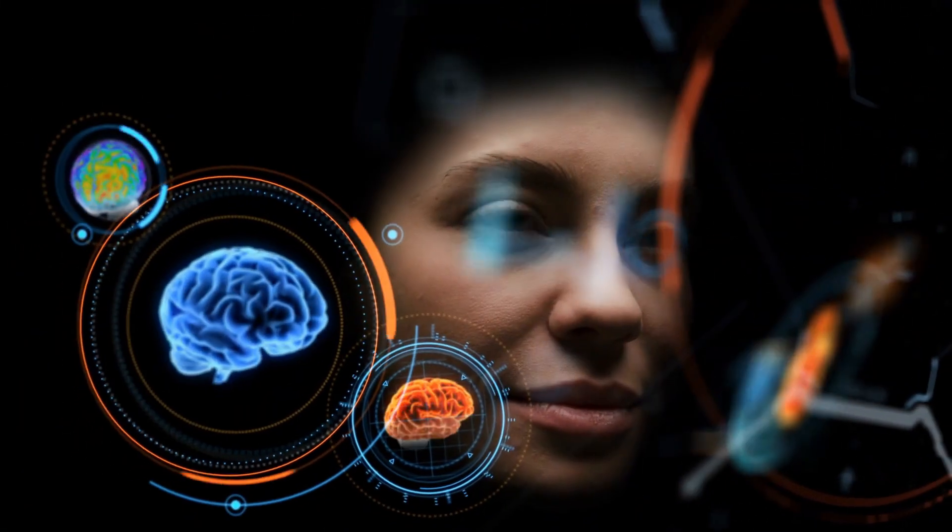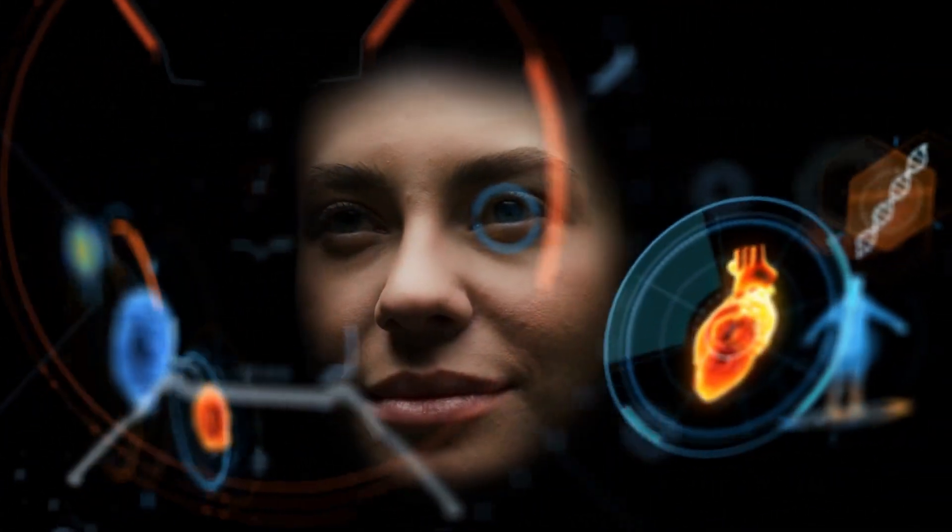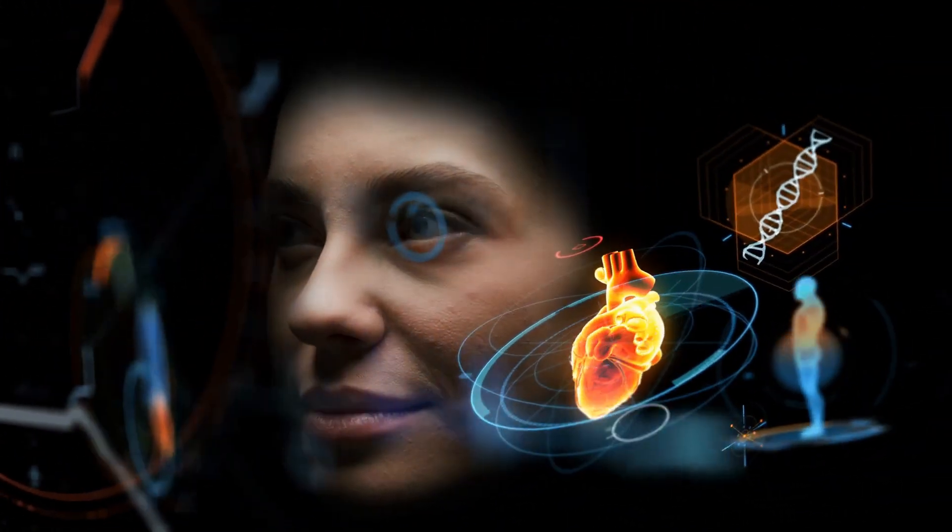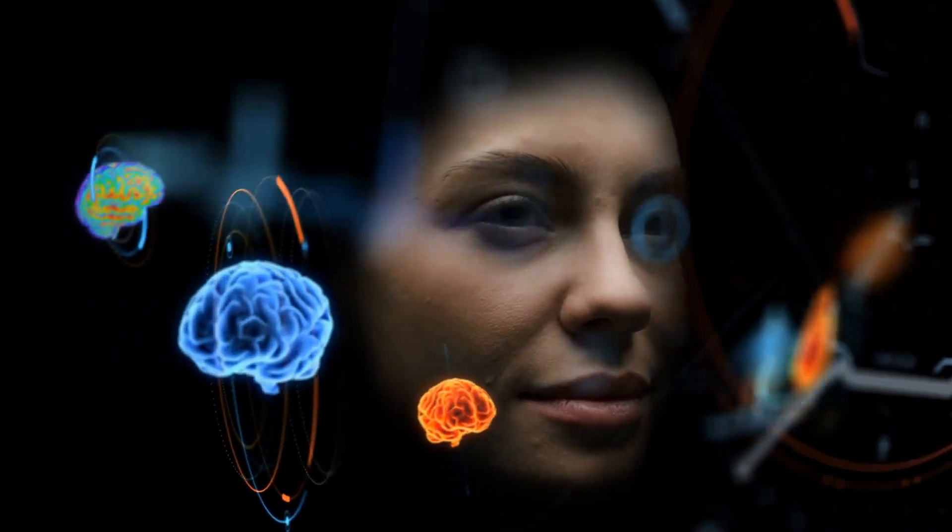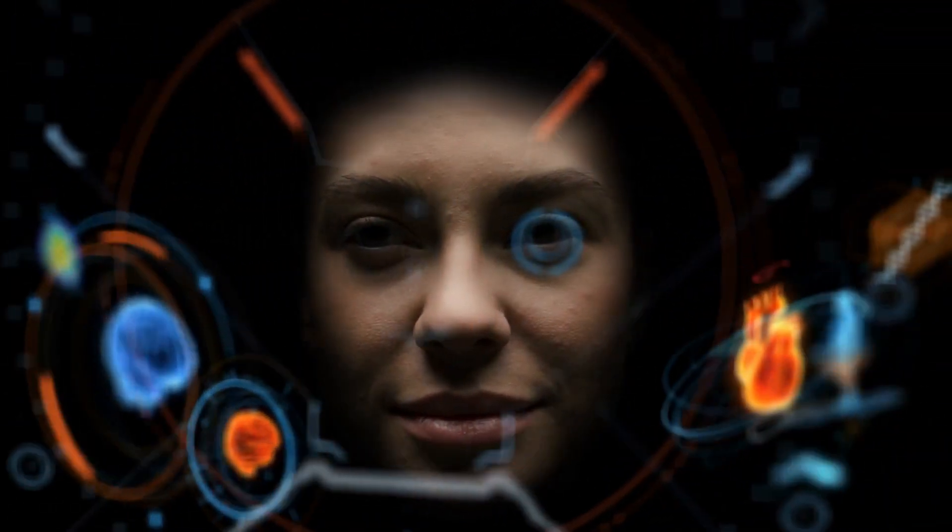However, the brain's storage system is indeed unique. Unlike a computer, the brain doesn't store memories in a linear fashion. It encodes and retrieves information in a complex, interconnected manner.